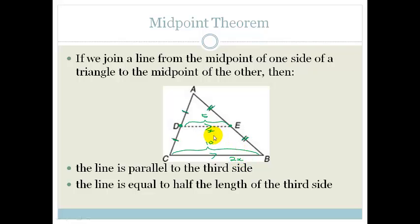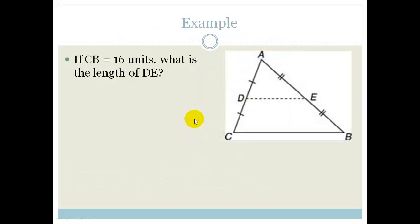So let's look at an example so we can see how we would use it. It says that if CB equals 16 units, how long is DE? So the tricky thing is, I must admit,